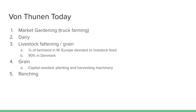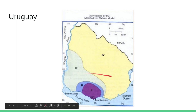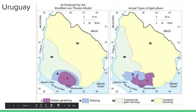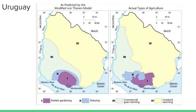So, von Thünen today. Let's take a look. As predicted, this is the country of Uruguay as predicted by von Thünen. Here's your market gardening and dairy, commercial grain, and livestock ranching. And what do you know — the actual land use types are pretty darn accurate. There are a few adjustments for actual physical geography features, but yeah, von Thünen's got it right.